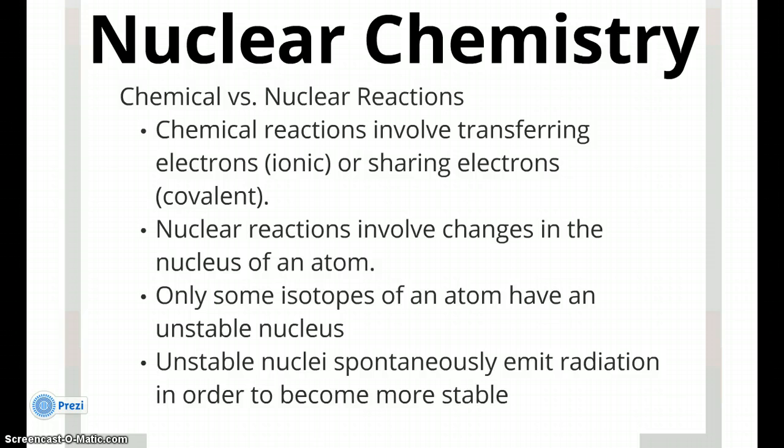But nuclear reactions involve changes in the nucleus of the atom. Only some isotopes of an atom have an unstable nucleus that gives off radiation by itself. Most nuclei are stable. Unstable nuclei spontaneously emit radiation in order to become more stable. And we'll talk about these different types of radiation in a few minutes.